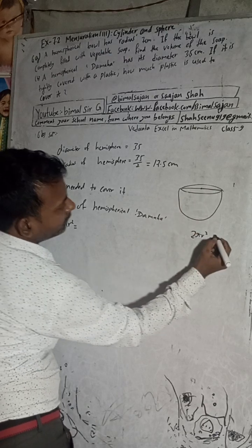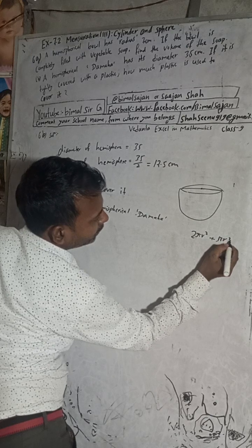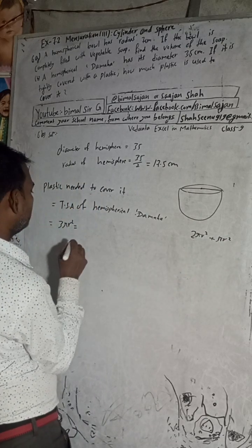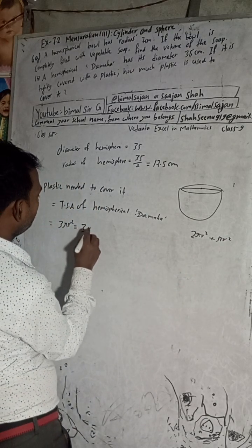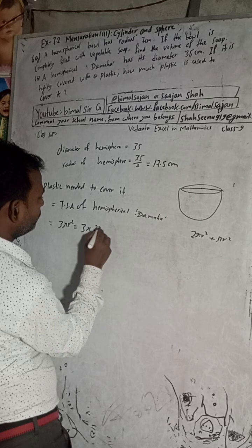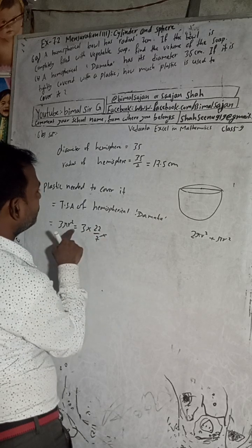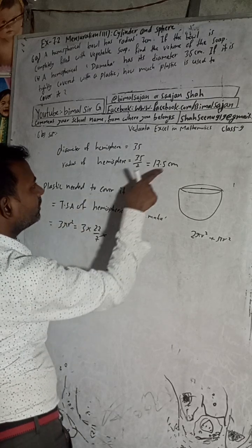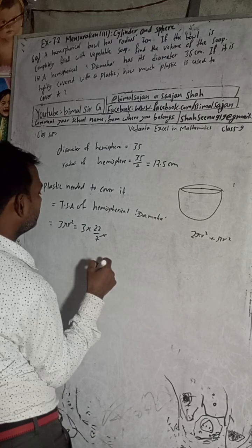This bottom part is a circle, so we add πr². Therefore the total surface area is 3πr². Now substituting: 3 into π, which is 22/7, into r squared. The radius r is 17.5 cm.